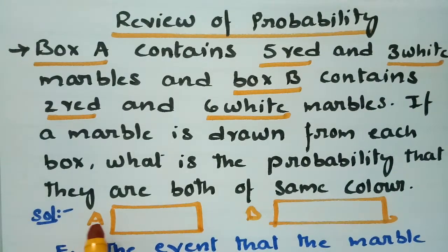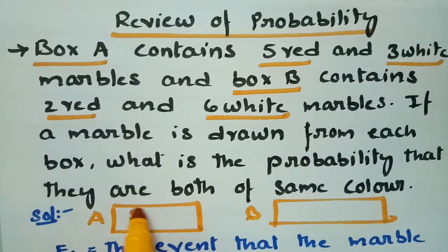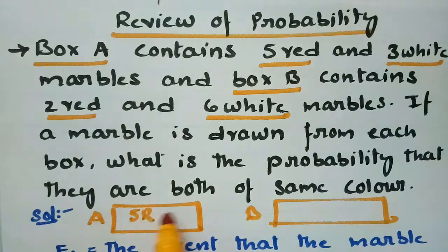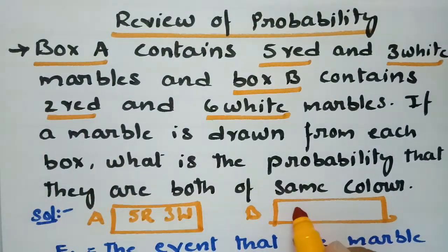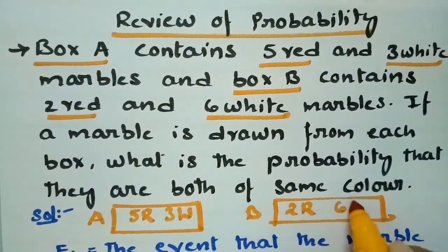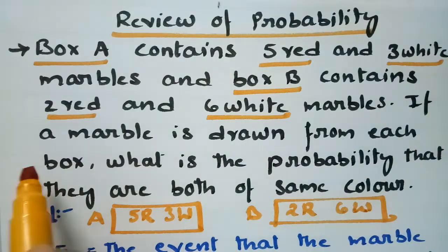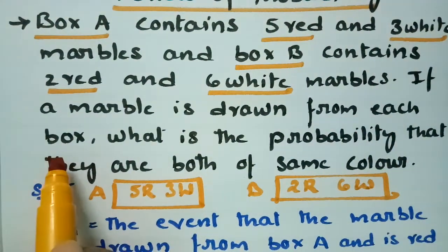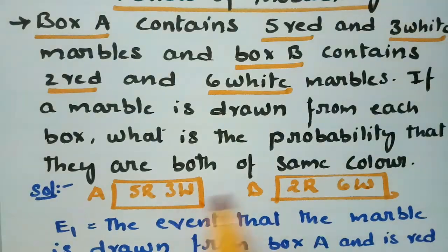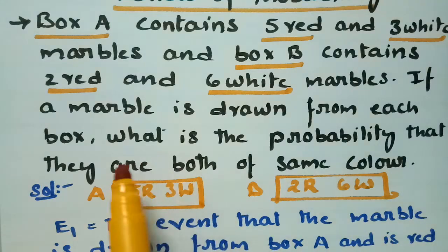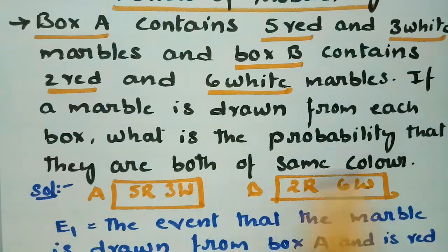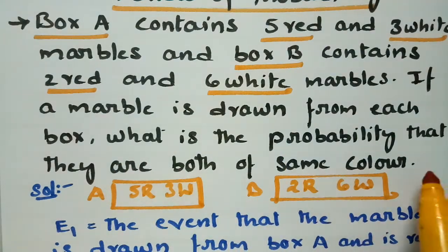Box A contains 5 red and 3 white marbles, and box B contains 2 red and 6 white marbles. If a marble is drawn from each box — from the first box as well as the second box — what is the probability that they both are of the same color?